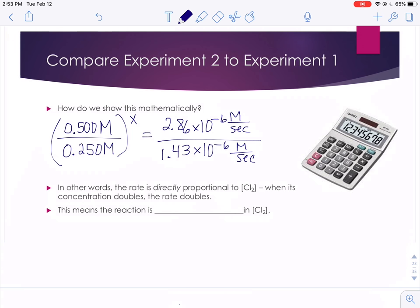If we simplify that a little bit, 0.5 over 0.25, that's 2 to the x power. And then 2.86 times 10 to the negative 6 divided by 1.43 times 10 to the negative 6 is also 2.